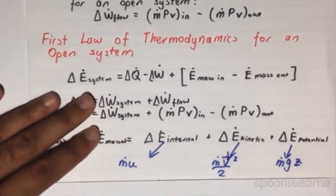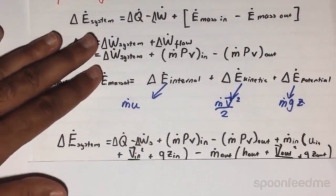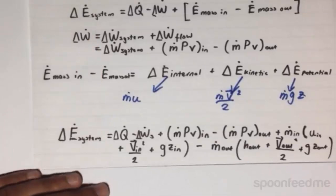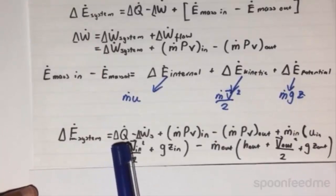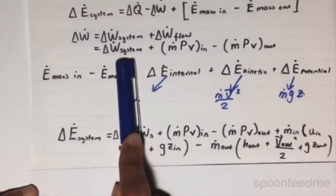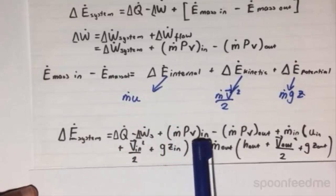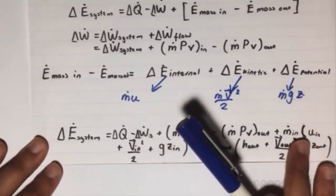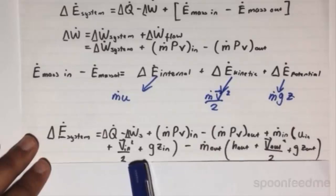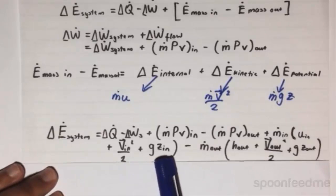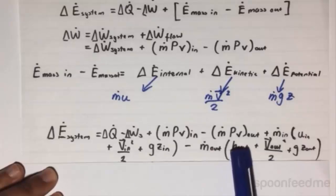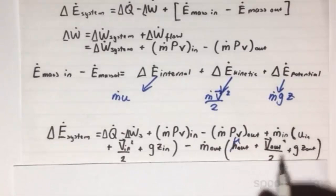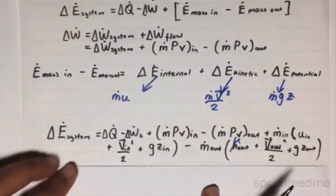Combining these equations into the big equation earlier, we get this very long equation, which shows that the change in Q̇ minus the change in Ẇ_system, plus ṁpv_in minus ṁpv_out, plus ṁ_in times (u_in + v_in²/2 + gz_in), minus ṁ_out times (u_out + v_out²/2 + gz_out).